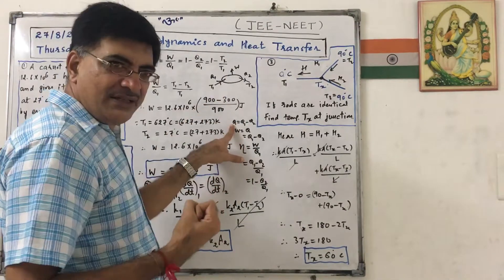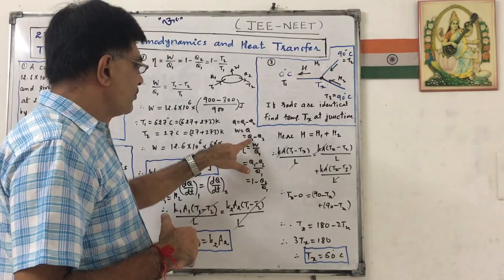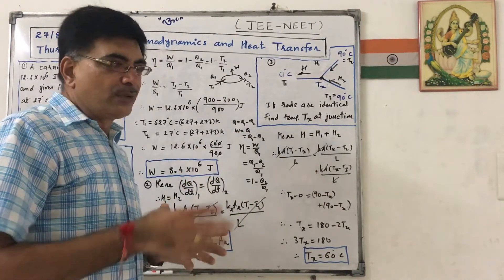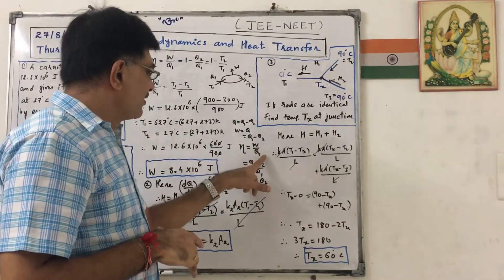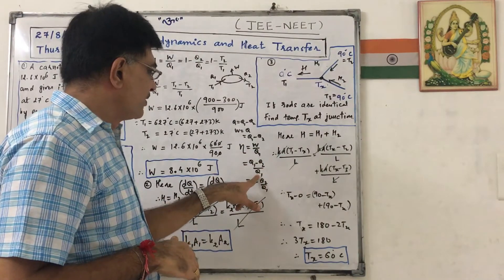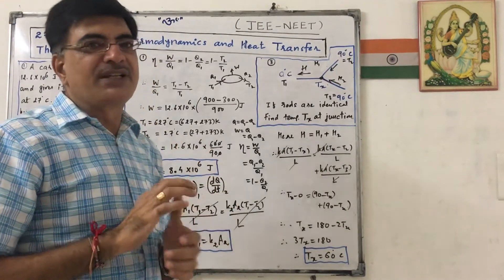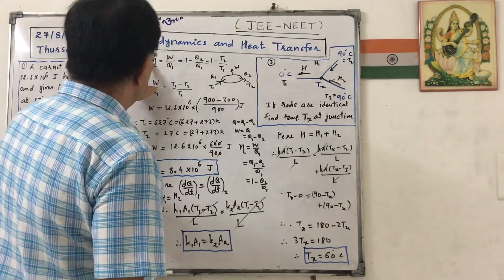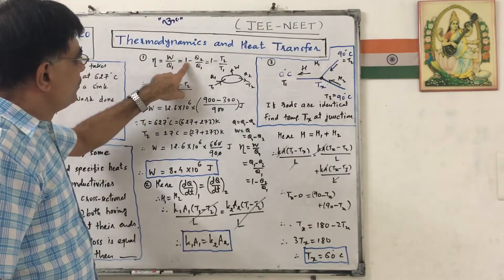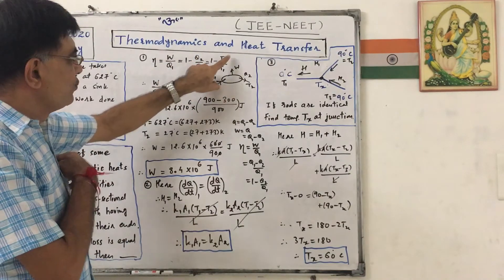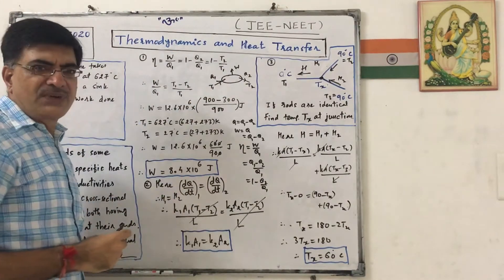So Q, that is net heat taken, equals to Q1 minus Q2. That will be converted into work, so work will equal to Q1 minus Q2. We know that efficiency equals to work done divided by total heat absorbed, so W by Q1, that is Q1 minus Q2 upon Q1, that is 1 minus Q2 by Q1. But for Carnot engine, we know that Q2 by Q1 equals to T2 by T1. So here efficiency eta equals to W by Q1 equals to 1 minus Q2 by Q1 equals to 1 minus T2 by T1.